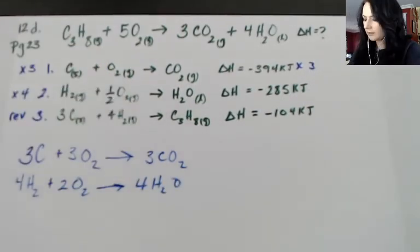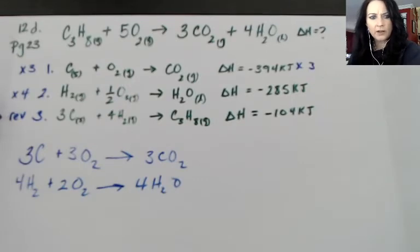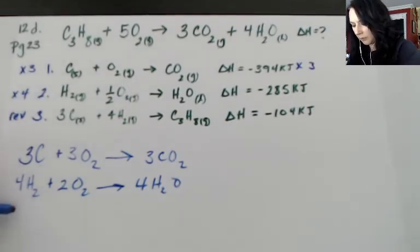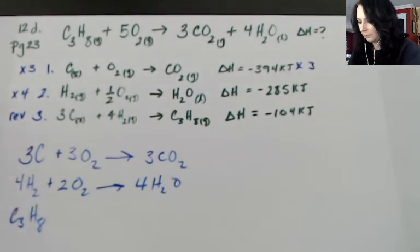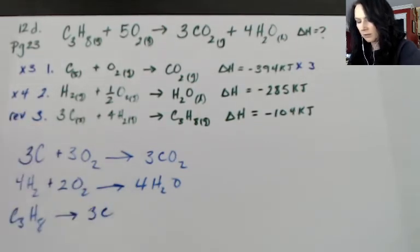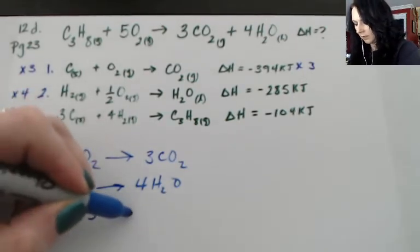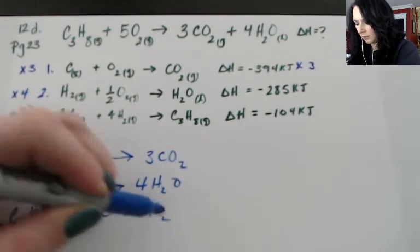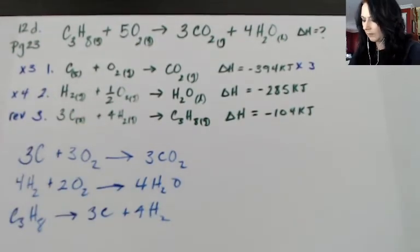And then the third one I said we're going to reverse it so I'm just going to reverse this. I'm not multiplying by anything. So C₃H₈ gave 3C and 4H₂.